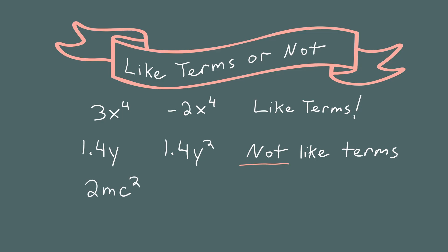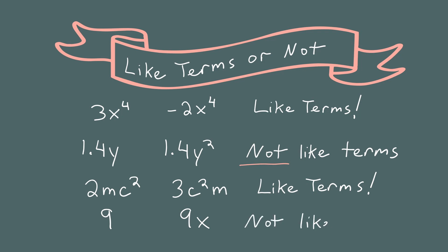2mc squared and 3c squared m — they are like terms. This one is a bit tricky. The numbers and variables are all multiplied together, and the variables and exponents are the same. Just because the variables are in a different order doesn't matter — mc squared equals c squared m. 9 and 9x — not like terms. The first term does not have a variable, but the second term does.